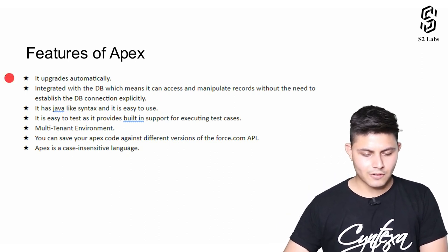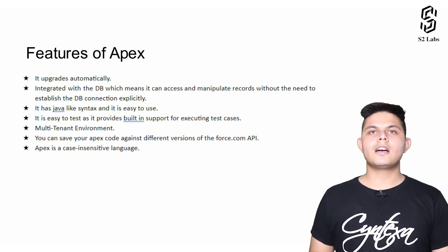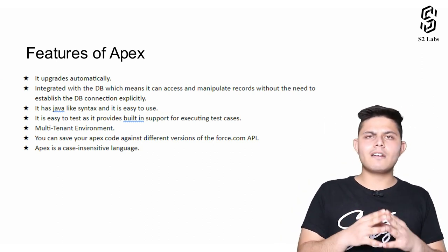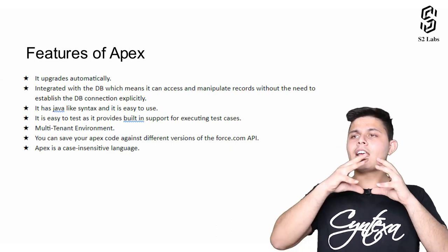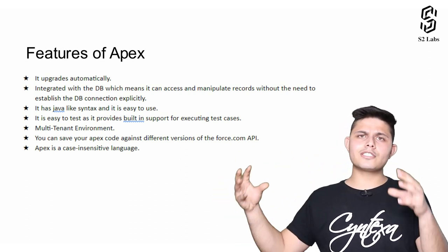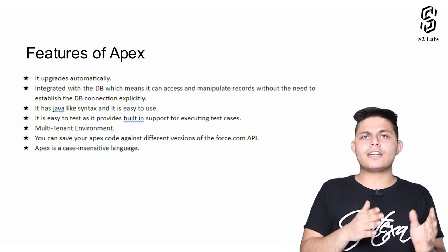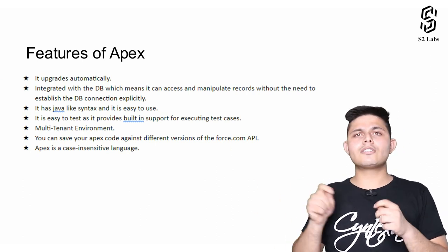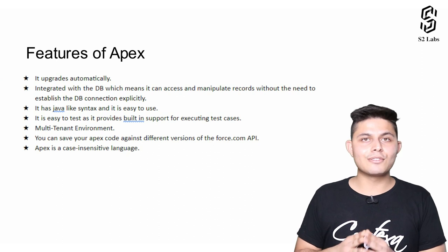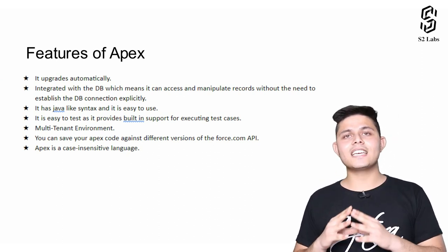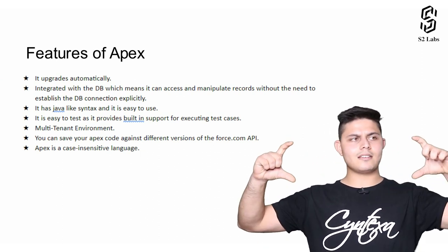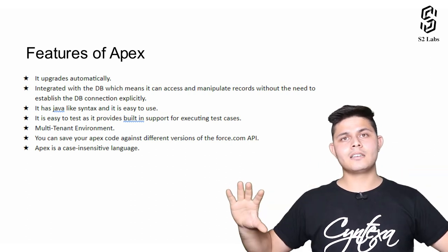The second feature, and preferably the most important feature I really love about Apex, is that it is already integrated with the database. Let's take an example of Java. In Java, in order to connect a program to a database, we had to use a connector — preferably a JDBC connector — and we had to first make a connection, then a statement object, and many other things. Then only we could write queries to insert something into the database or get something out. But with Apex, it is very easy because it is already integrated with the database. If you want to get something out from the database, all you need to do is write the query inside square brackets — and that's it.